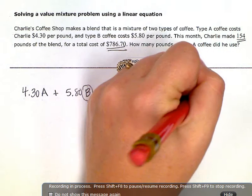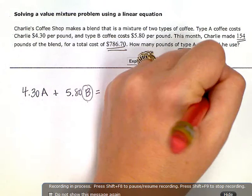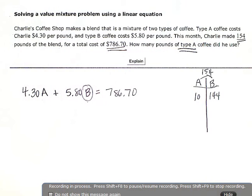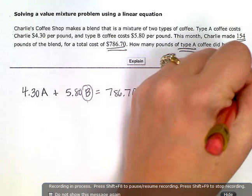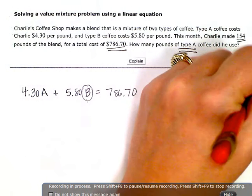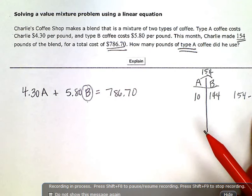So if I had 10 pounds of A, coffee A, then there would have to be 144 pounds of coffee B. And the way I figure that out is I say, okay, I know there's a total of 154. If I subtract out my A coffee, then I'm left with the B coffee.